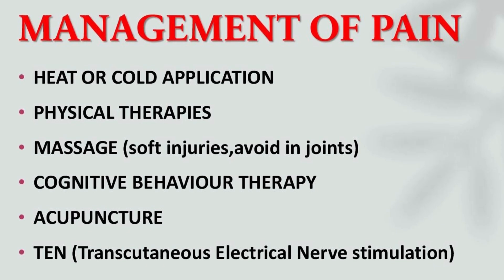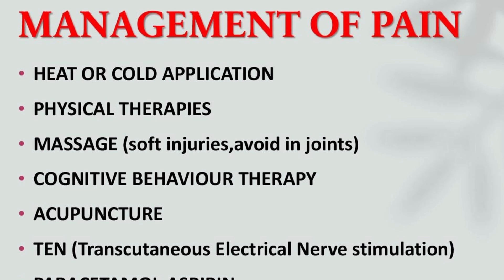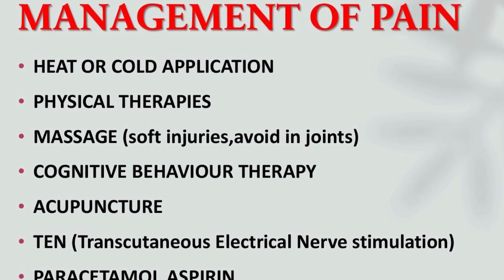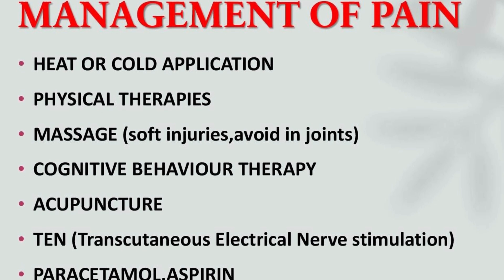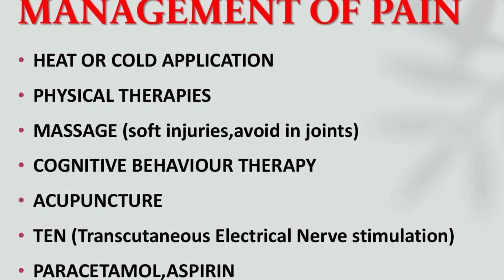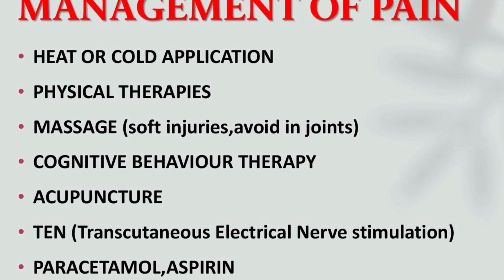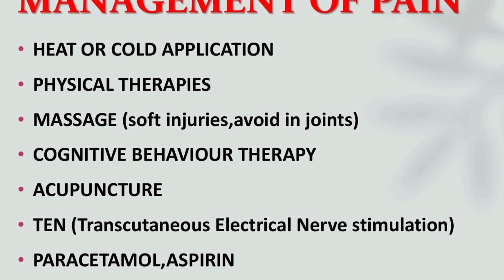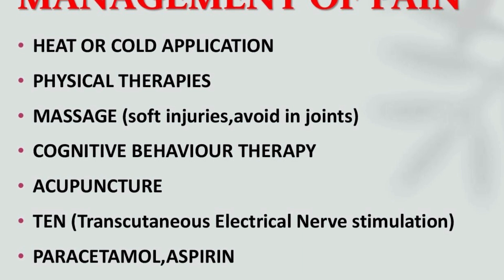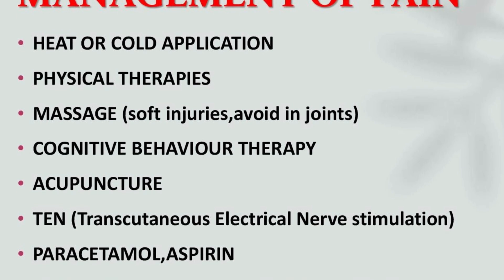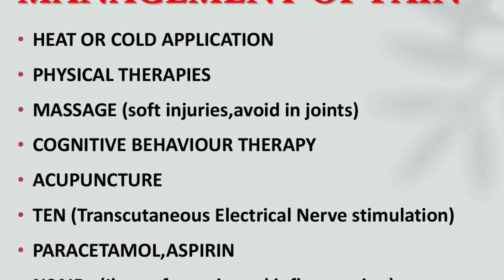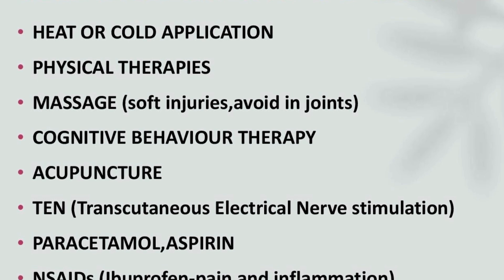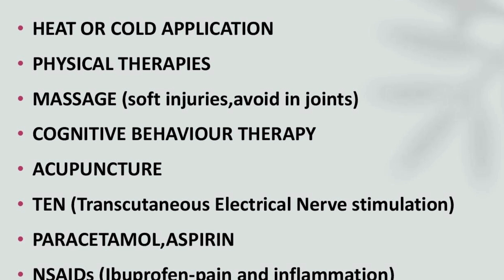Now let us see the management of pain. Heat application is better for relieving chronic muscle or joint pains, while cold reduces swelling. Physical therapy includes walking, stretching, strengthening, and aerobic exercises. Massage is good for soft tissue injuries but should be avoided on joints. Cognitive behavioral therapy is a valuable strategy for learning to self-manage chronic pain. Acupuncture is a traditional Chinese medicine that aims to restore balance within the body and encourages healing by releasing natural pain-relieving compounds like endorphins.